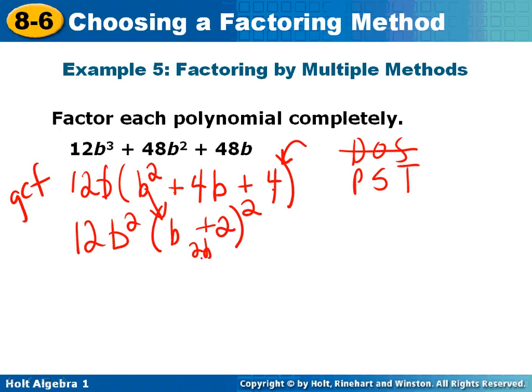So that's b plus 2. 2 times b is 2b. Double that, I get 4b. Did it work? Yes, it did work. This is going to be my final answer. 12b squared, parentheses, b plus 2 squared.